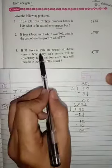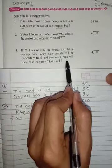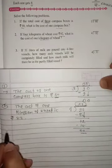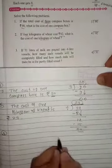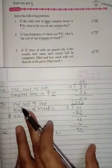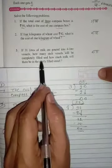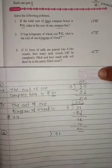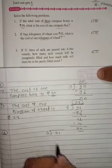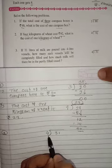Question number three: If 31 liters of milk are poured into 4-liter vessels, how many such vessels will be completely filled and how much milk will be there in the partly filled vessel? 31 liters of milk are poured into 4-liter vessels.